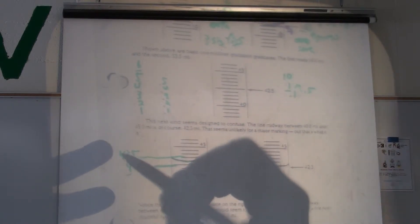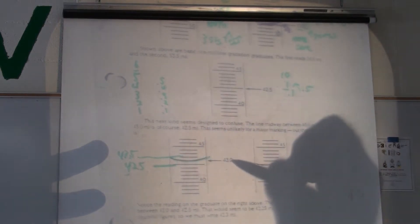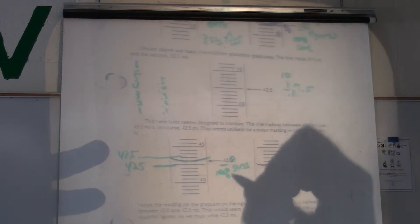So, you know it's between 42 and 43 is basically what you know. So, then you guess out to the tenths. That's still a guess.